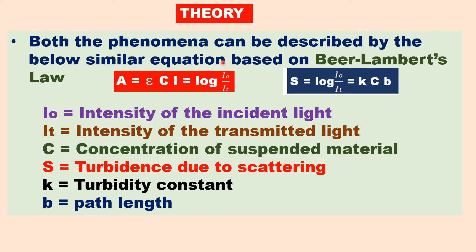Let us discuss the theory of these methods. Both phenomena are based on Beer-Lambert's law, and a similar equation is used. According to Beer-Lambert's law, A = ε·C·l = log(I₀/It). In turbidimetry, S = log(I₀/It) = k·c·b, where I₀ is the intensity of the incident light, It is the intensity of the transmitted light, c is the concentration of the suspension, S is the turbidance due to scattering by the suspended particle, k is the turbidity constant, and b is the path length.